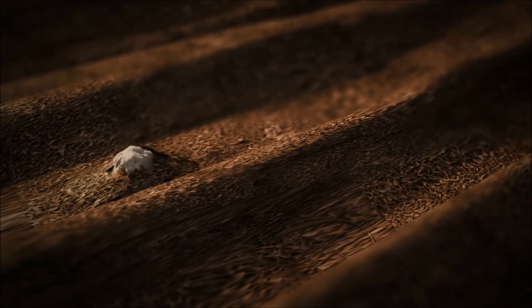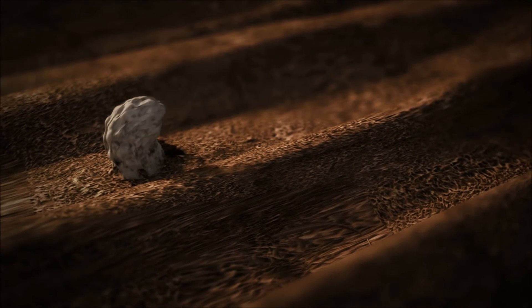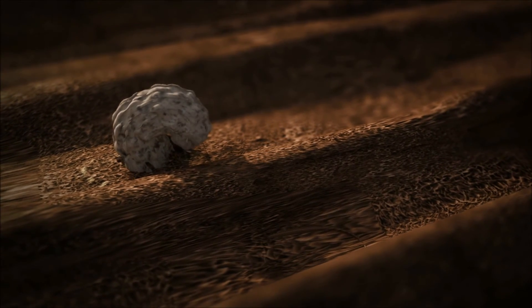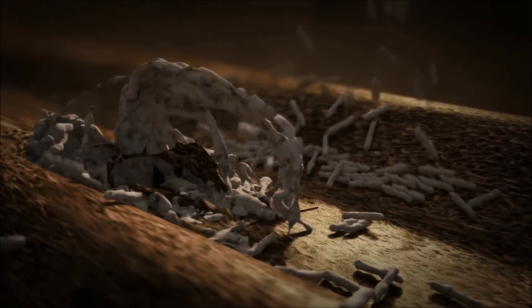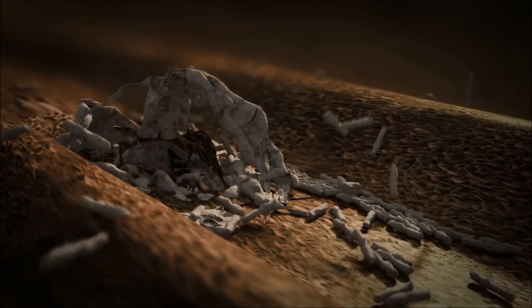In the final stage of the septoria cycle, fruiting bodies full of spores are formed. These spores can become airborne, or most frequently splashed onto adjacent leaves and plants.